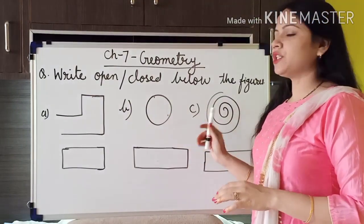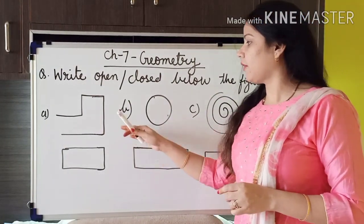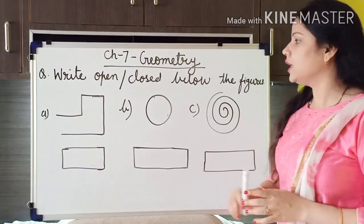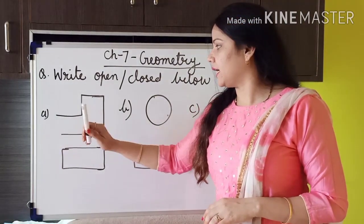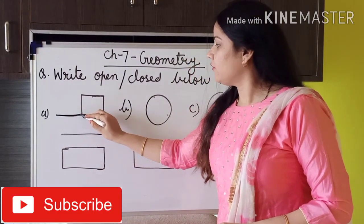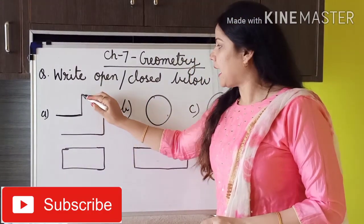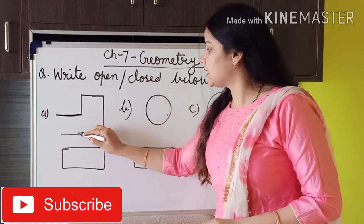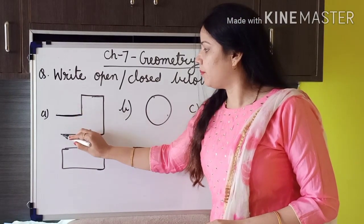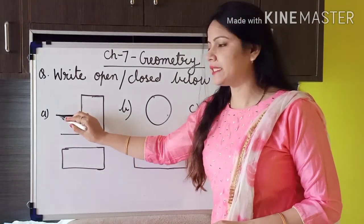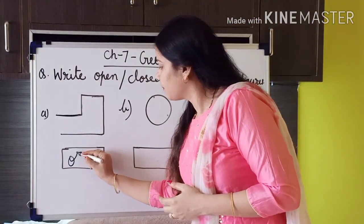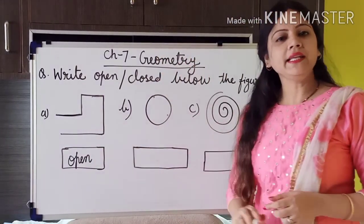Now here are three figures, and we have to find out whether these figures are open figures or closed figures. First, we look at figure A. As you can see, we started the line from one place, went through these areas, and ended the drawing at a different place. So here, both the starting and end points are different. So we can write here: open figure.